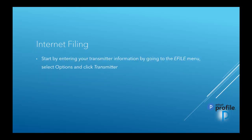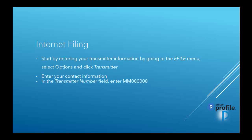Here are the steps to internet filing. You want to start out by entering your transmitter information by going to the e-file menu, then select Options, and click Transmitter. Then enter your contact information in that window. In the Transmitter number field, you can enter the generic code MM000000, or if you have a transmitter number available, you can use that number.